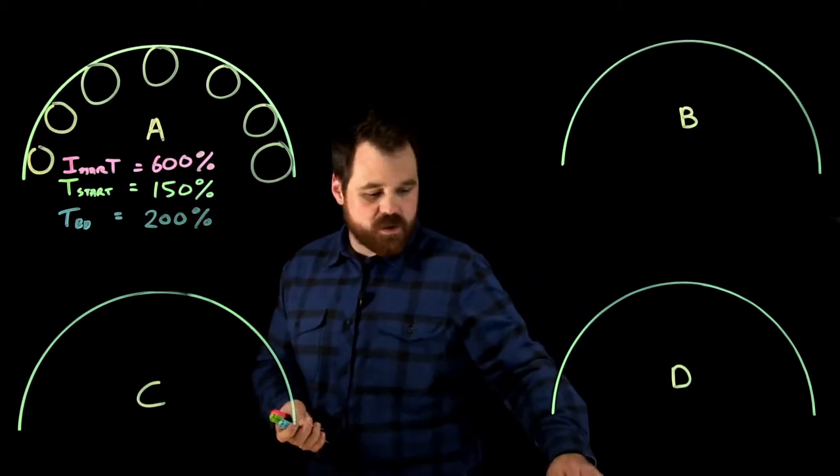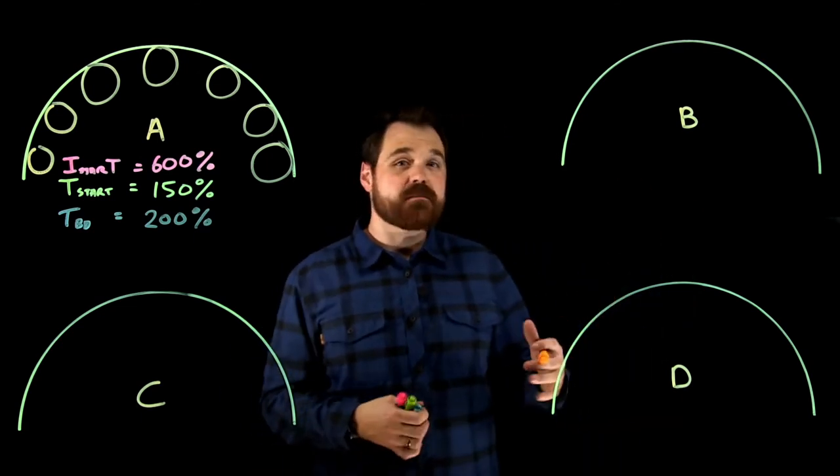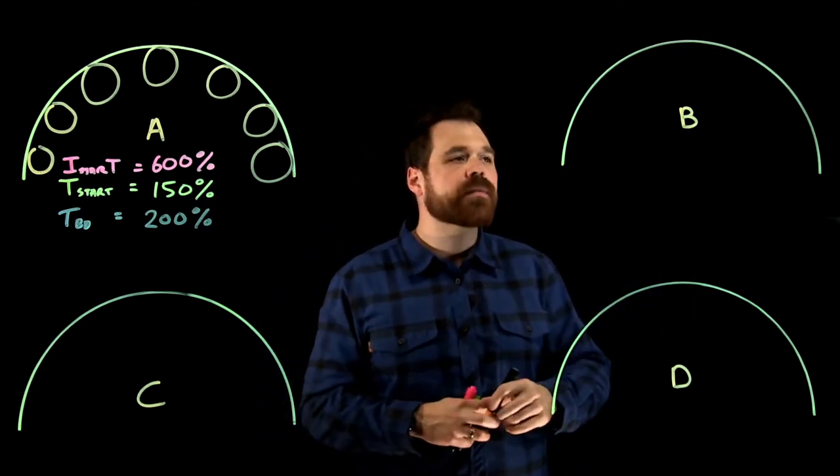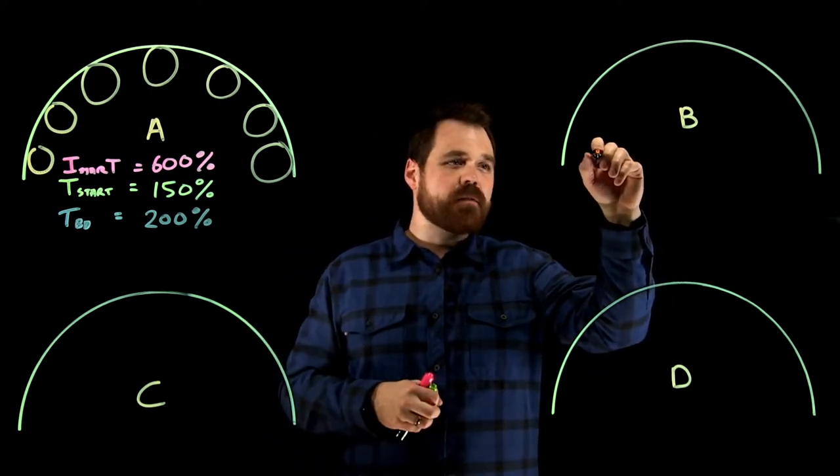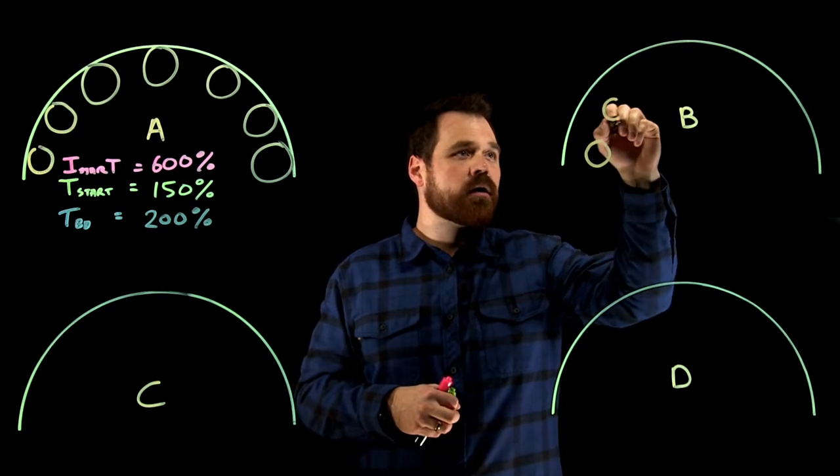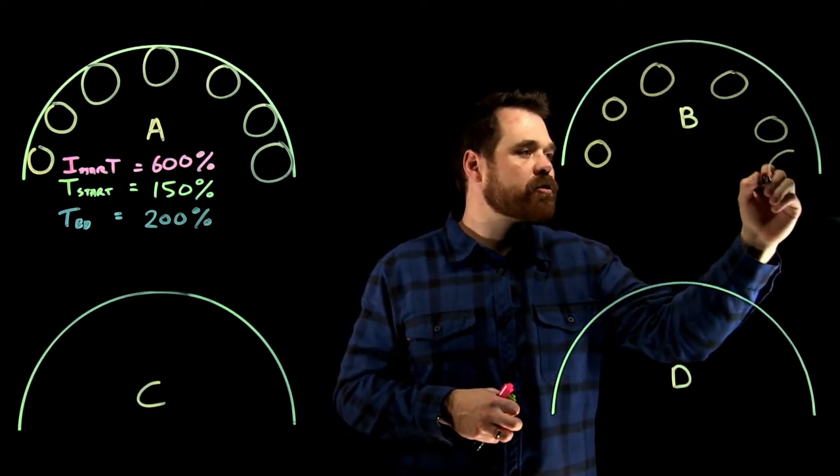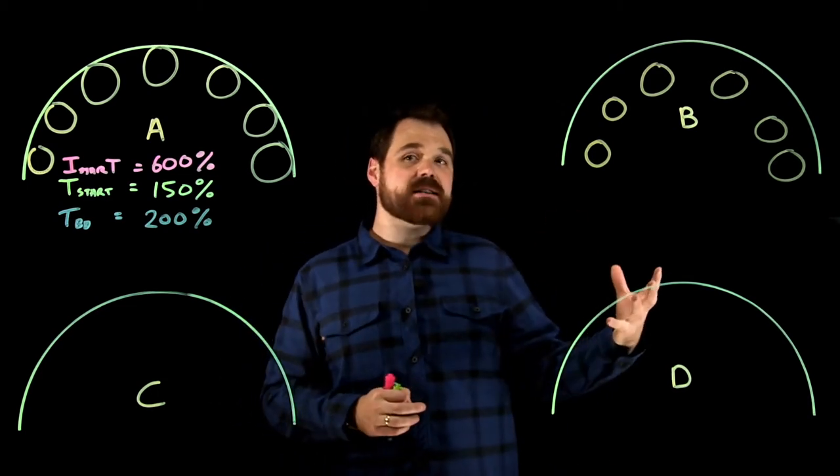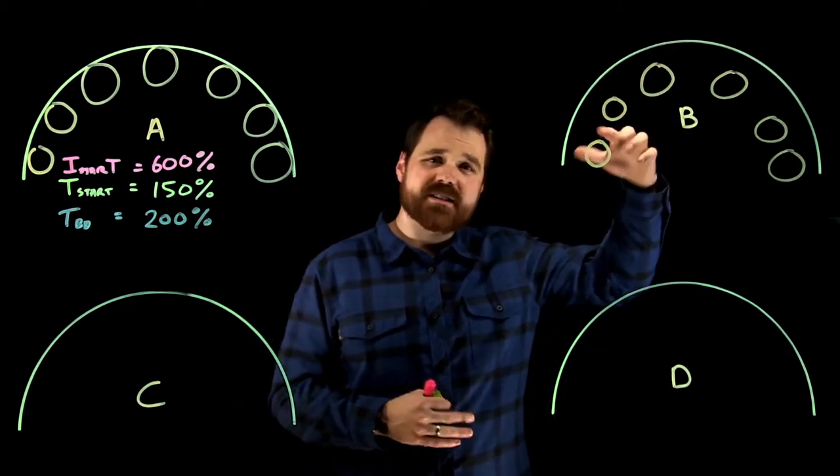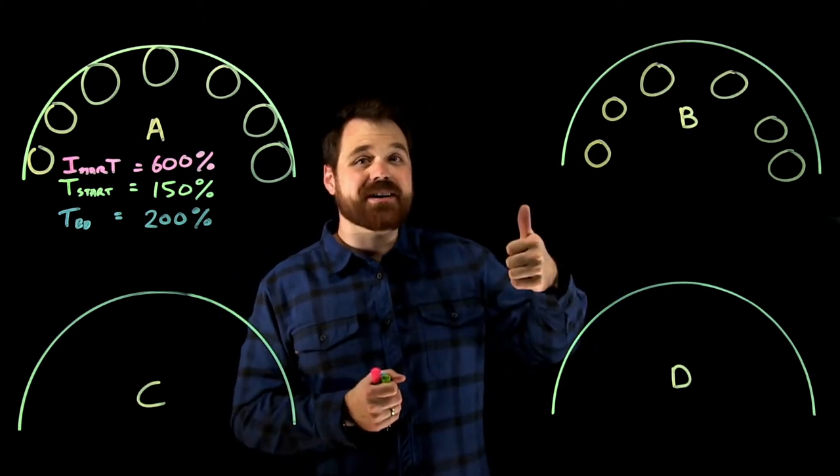Now the next one I want to talk about is a NEMA rotor design B. Now this rotor design B it's our most common rotor. So what we kind of see is it's pretty efficient. It's our most common we see those large bars, but we see them inset from the edge a little bit. So it looks something like that.